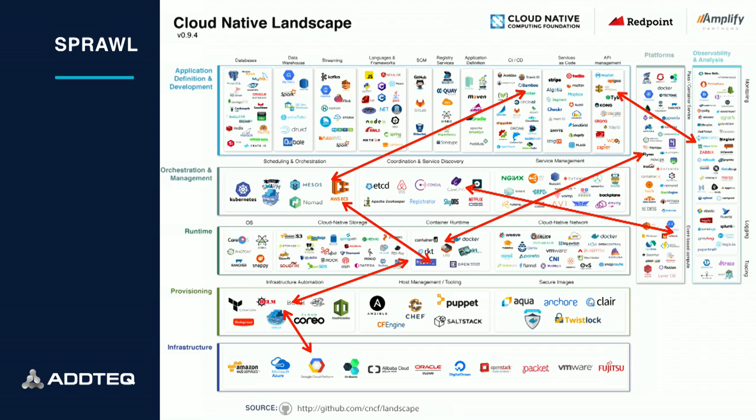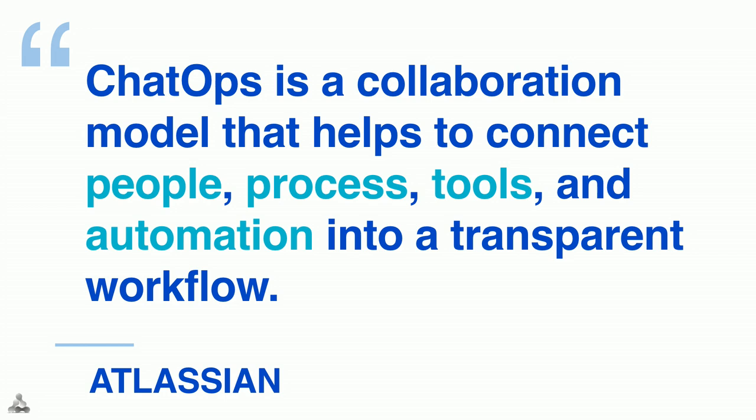When you look up the definition of chat ops, you'll find a lot of different definitions. I personally like the one that Atlassian put out in a blog post. They define chat ops as a unification of processes, tools, and automation in a unified and conversational workflow. It's a perfect definition because you have your tools, you have people, and you need a generic workflow that can span across people and tools to achieve some general levels of automation. That's where chat ops can really be helpful.